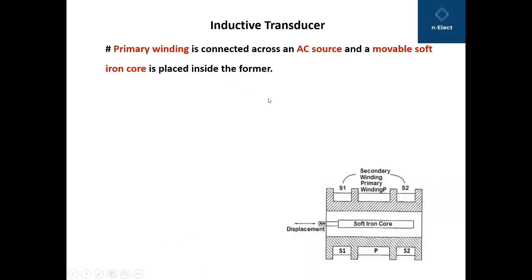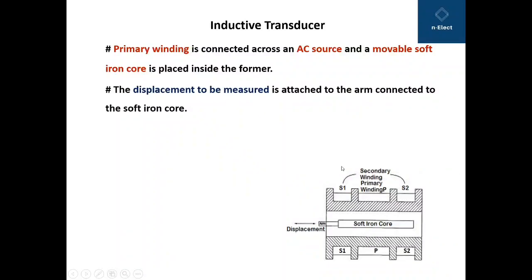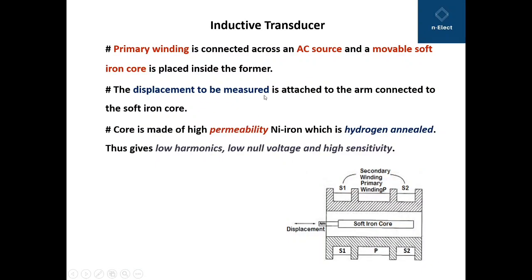The primary winding is connected across an AC source — this is standard for any transformer. A movable soft iron core is placed inside the former, and the displacement to be measured is attached to an arm which is connected to this soft iron core.